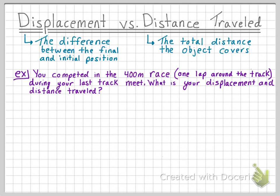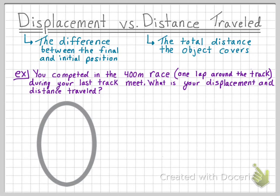Let's do another example. You competed in the 400-meter race, which is one lap around the track, during your last track meet. What is your displacement and distance traveled? Say we have our track here, and you begin at the start. To compete in the 400-meter race, you must run one lap around the track as shown.